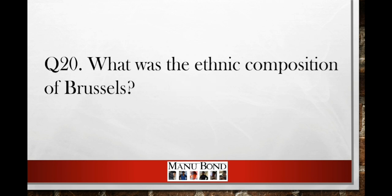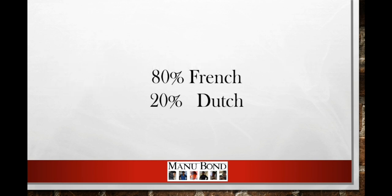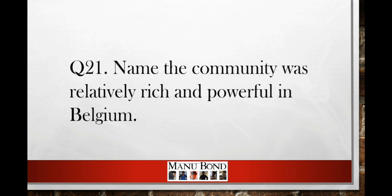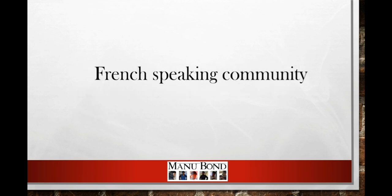Question number twenty: what was the ethnic composition of Brussels? Answer: 80 percent French, 20 percent Dutch. Question number twenty-one: name the community that was relatively rich and powerful in Belgium. Answer: French-speaking community.